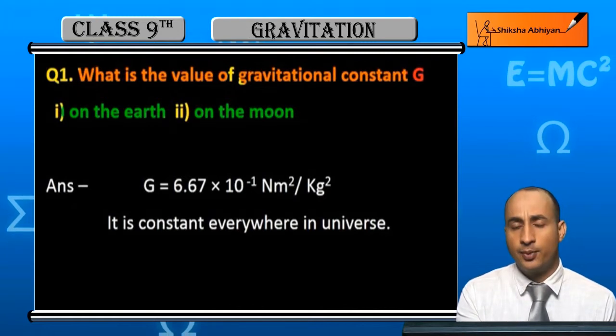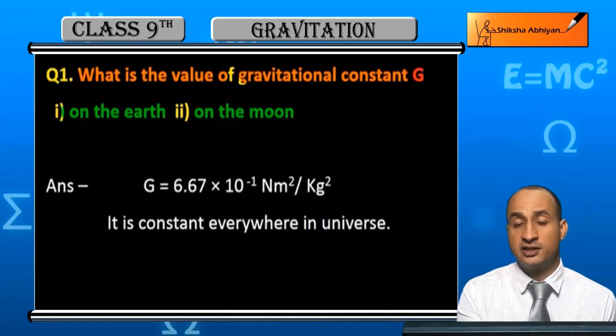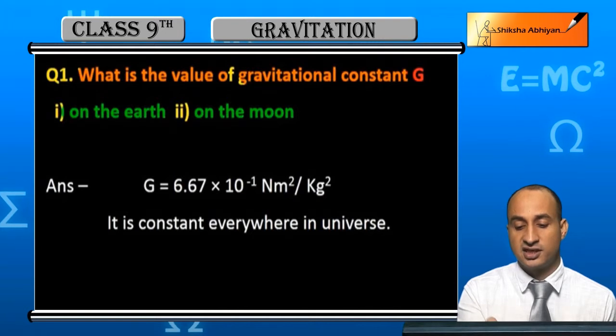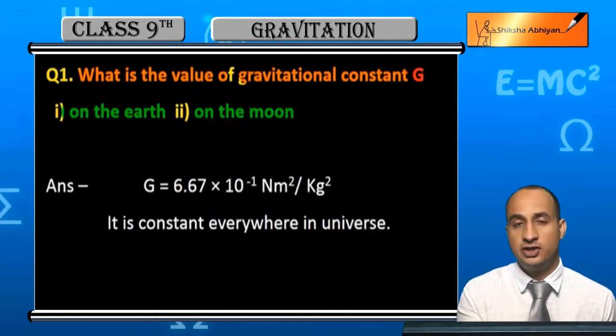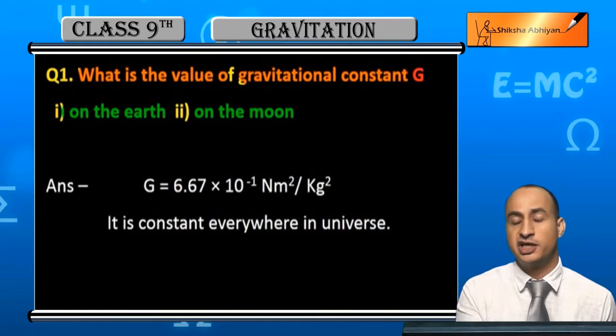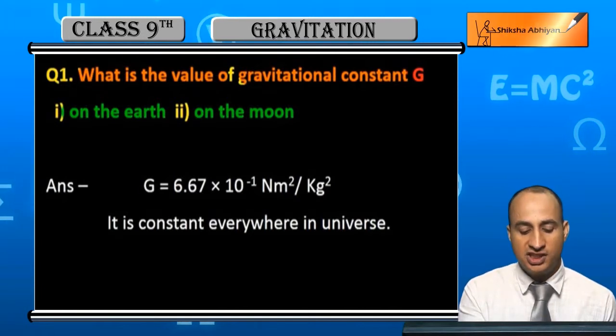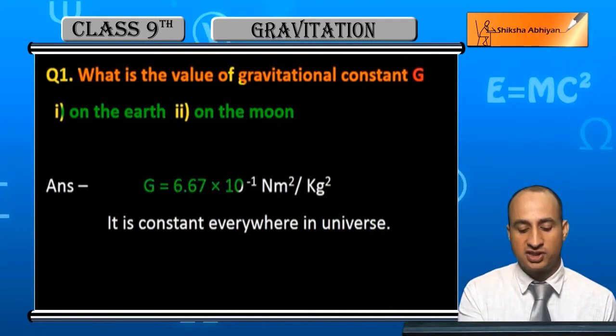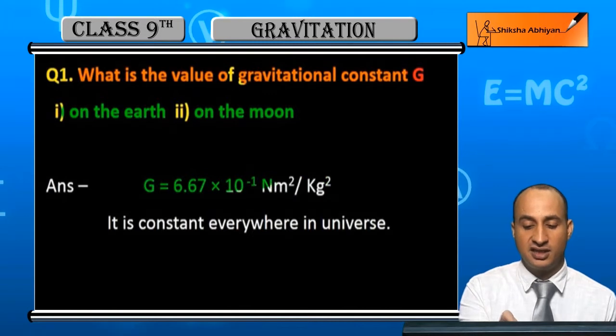Student, I have told you that the gravitational constant is a constant. It does not change its value on any heavenly body, anywhere in the universe. The G value is 6.67 × 10^-11.